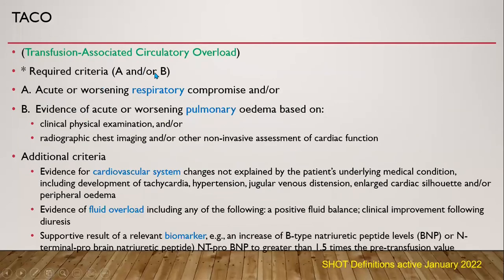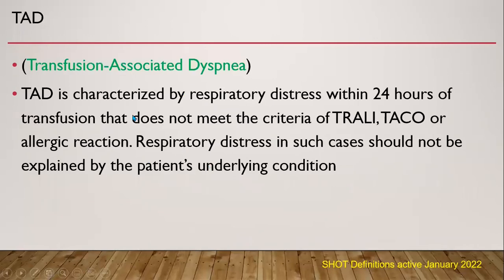Transfusion-associated circulatory overload (TACO) includes required criteria: respiratory and additional criteria of cardiovascular system, fluid overload, and biomarkers. Transfusion-associated dyspnea is characterized by respiratory distress within 24 hours of transfusion that does not meet the criteria of TRALI, TACO, or allergic reaction, and the respiratory distress should not be explained by the patient's underlying condition.